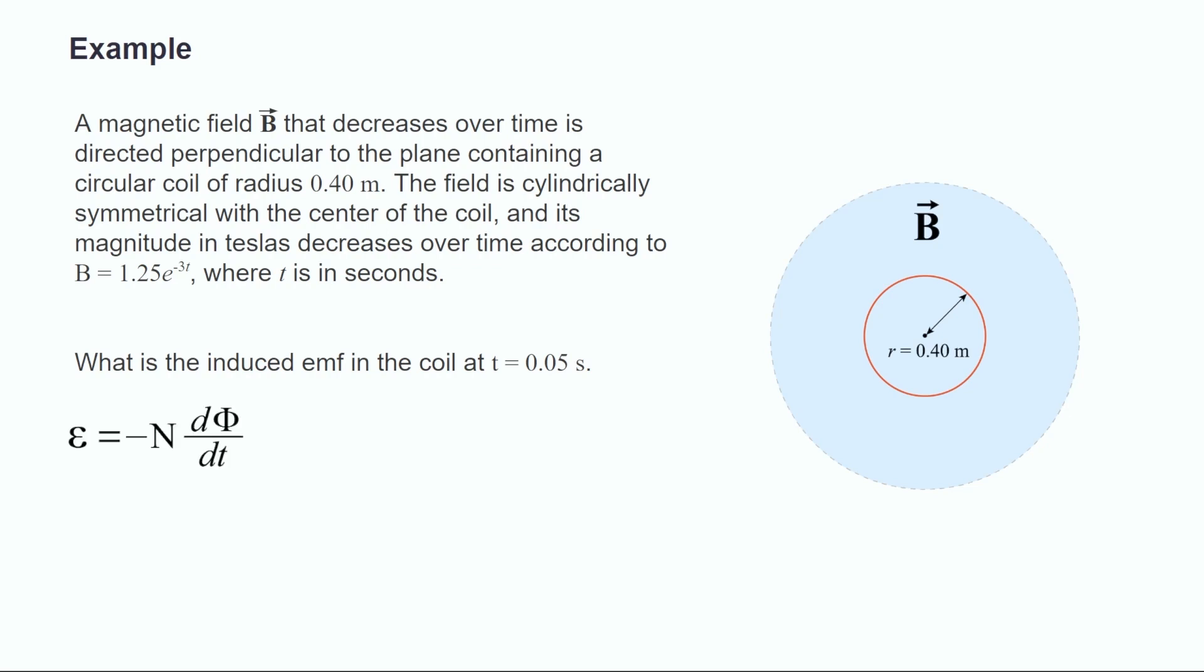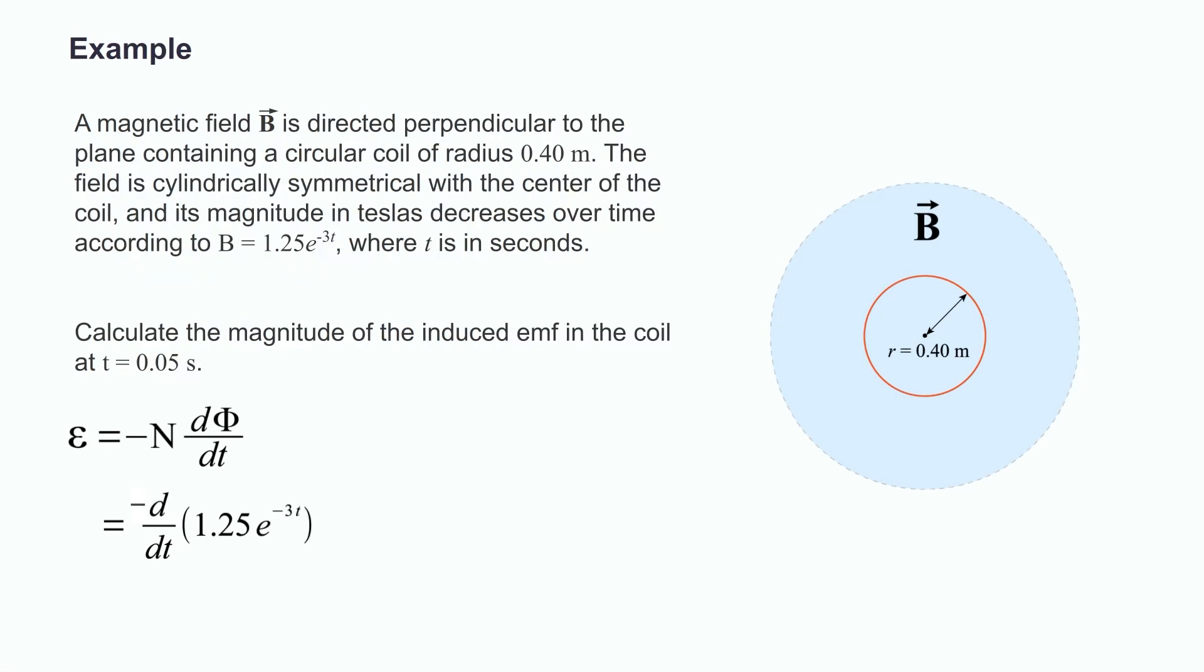We start by examining our equation for EMF, which has the negative sign, remember, and n for the number of coils. In this example, there's only one coil, which means n equals 1.